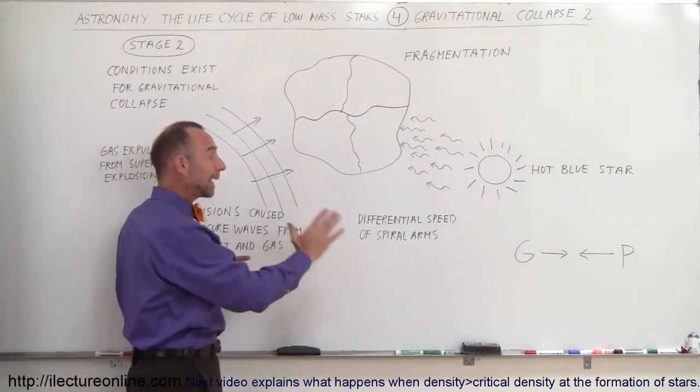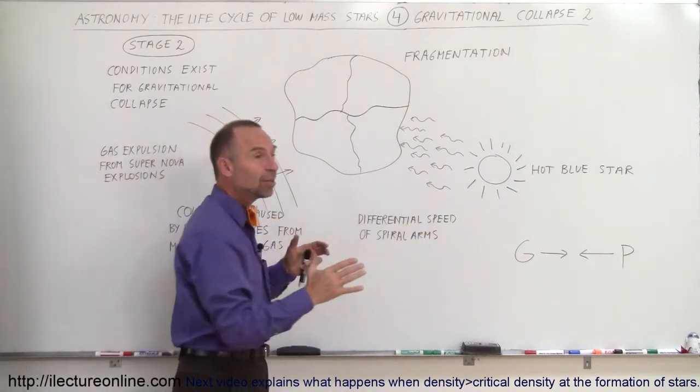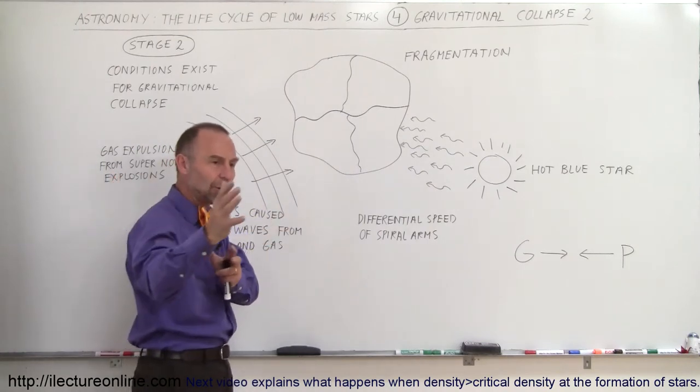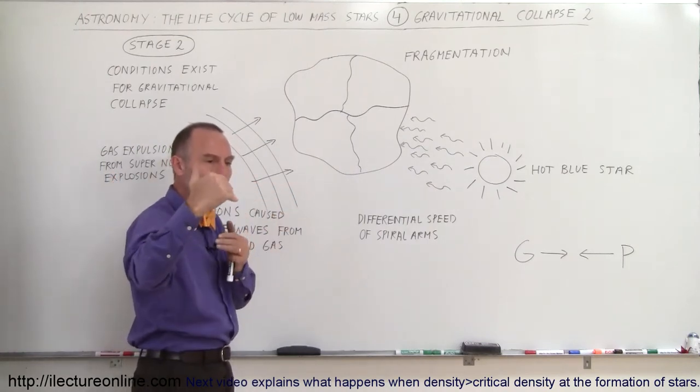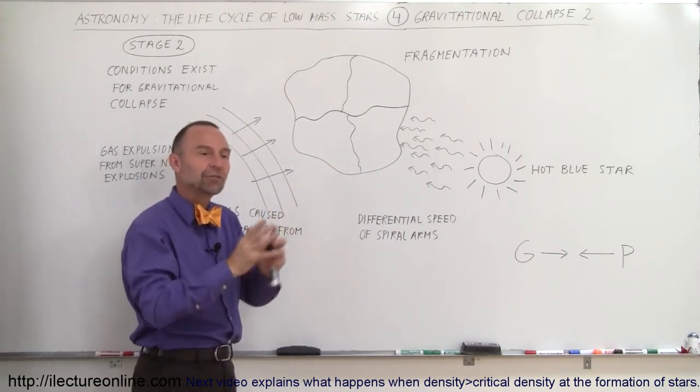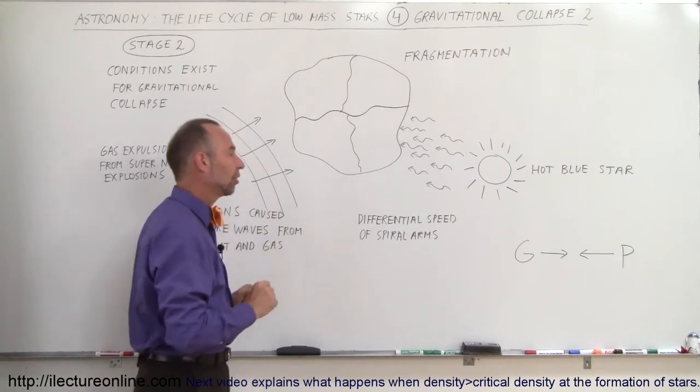Sometimes also within the galaxies we would have differential speeds of masses within the galaxy moving, which would mean that a faster region would move faster than the region in front and collide with the slow region in front of it, again compressing gases closer together.